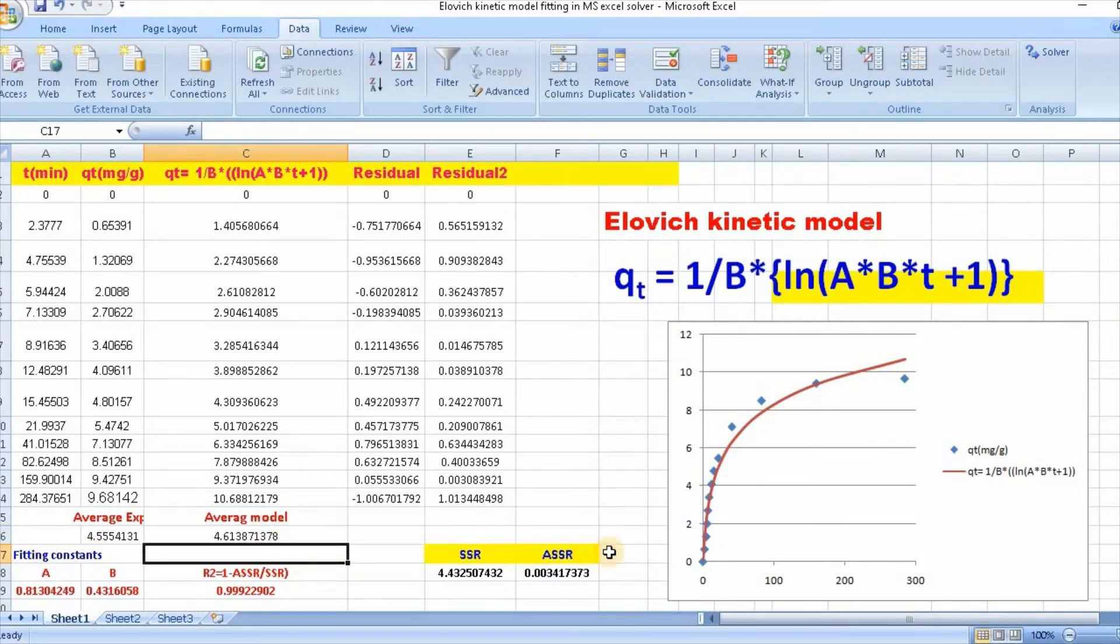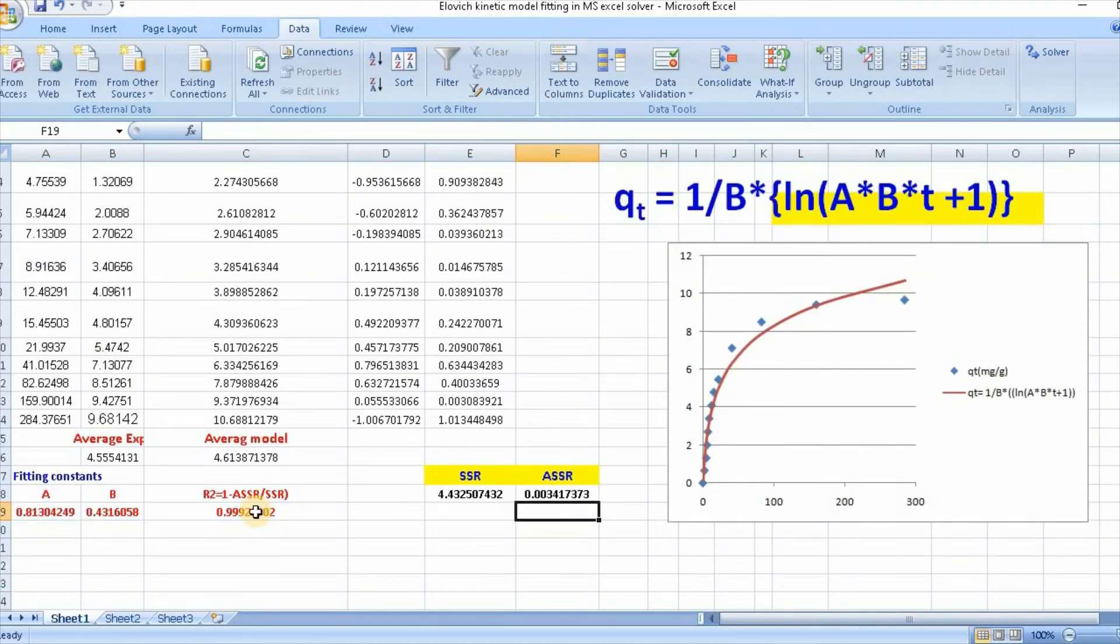You need to calculate average residual sum of square as SSR, which is equal to just this minus this square, then click enter. R square value equal to 1 minus SSR divided by SSR, then click enter. Here is our r square value.